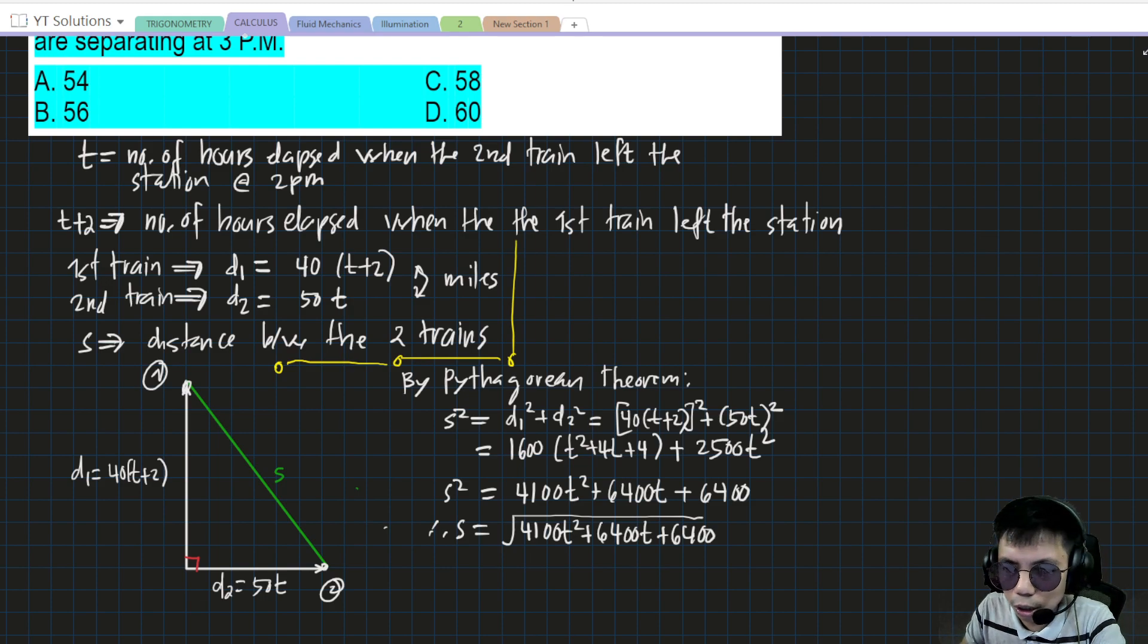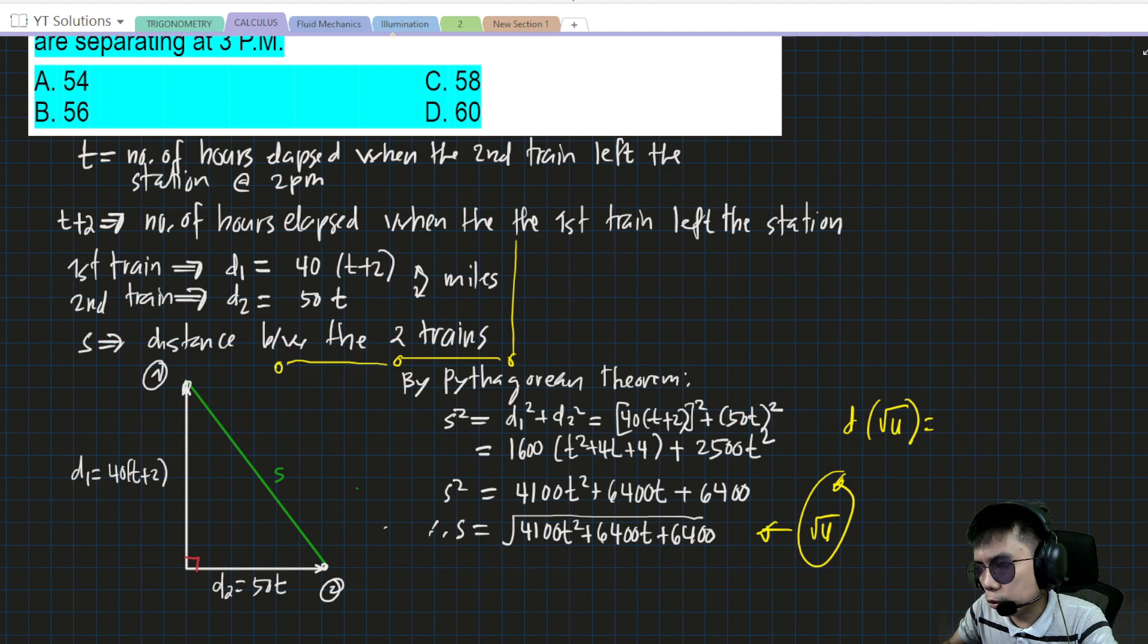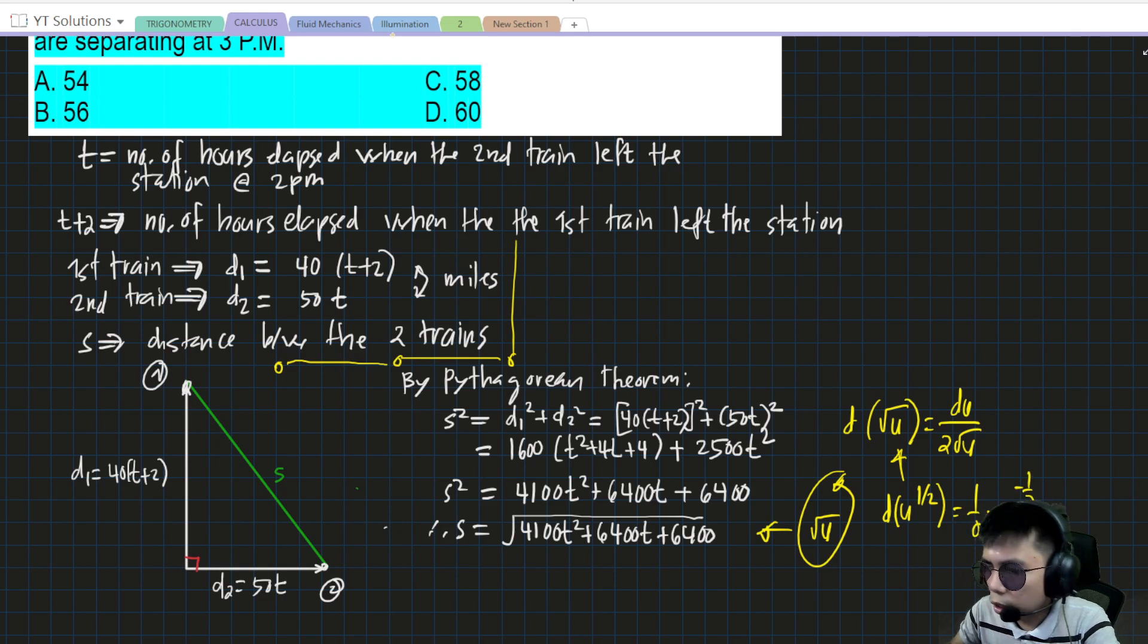Remember, what's required is the rate of change of the distance between the two trains, so we have to get the derivative of s with respect to time. Treat this as a function of u, square root of u. The derivative of square root of u is du/(2√u). You can also convert u to u^(1/2), then the derivative is (1/2)u^(-1/2) times du.